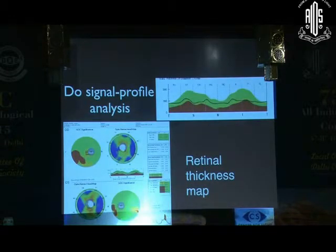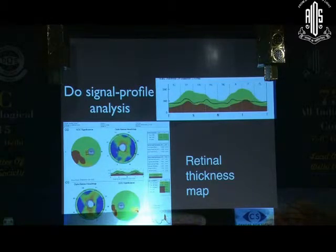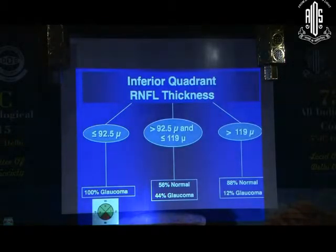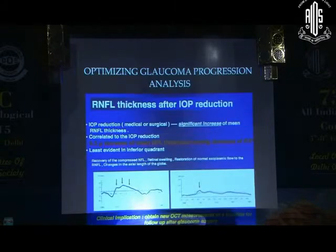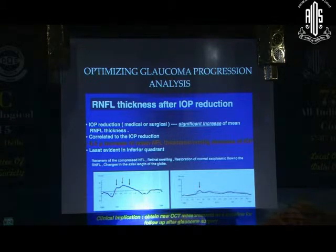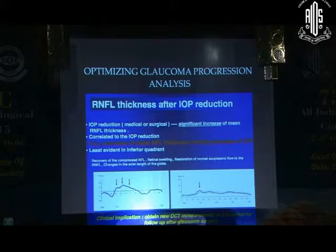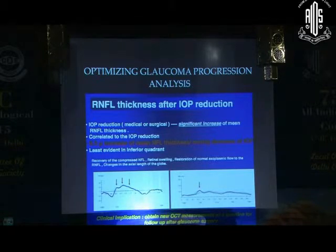Do not underestimate the importance of the retinal thickness map — sometimes you will pick up changes here which are not reflected in the average RNFL. Numbers, though important, can be misleading. Remember that intraocular pressure can affect the RNFL thickness, so you need to repeat scans fairly often to get a good baseline, which is important for assessing progression. You need to reset this baseline every time you have a new target pressure, or when you operate the patient for glaucoma or cataract.